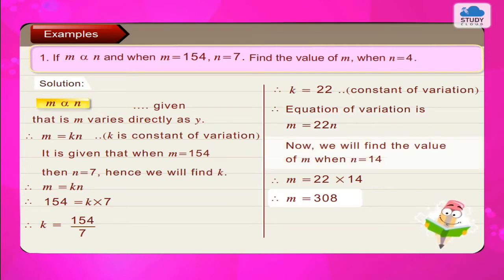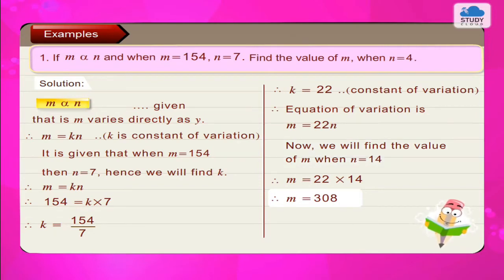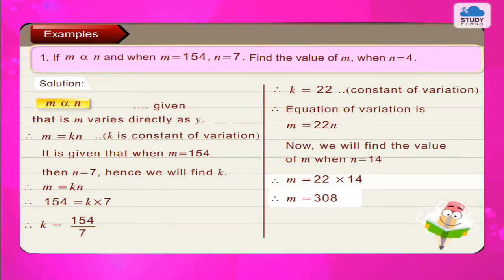Now we will find the value of m when n = 14. Therefore m = 22 × 14. Therefore m = 308.